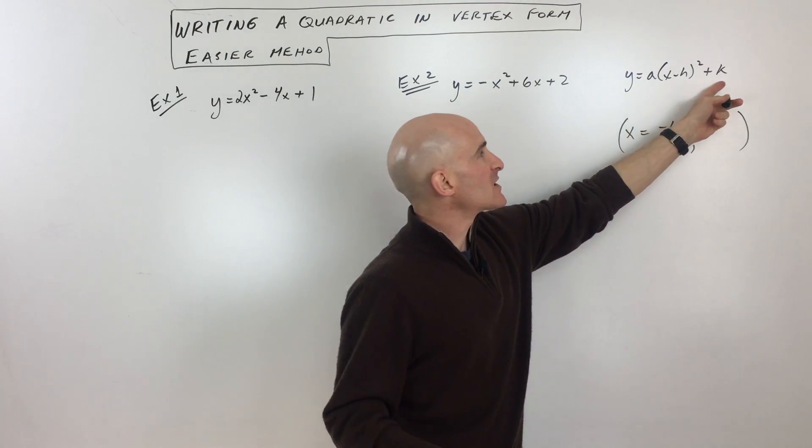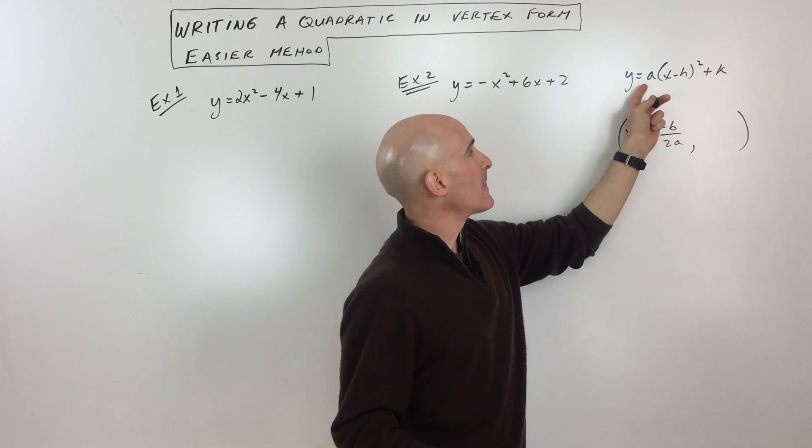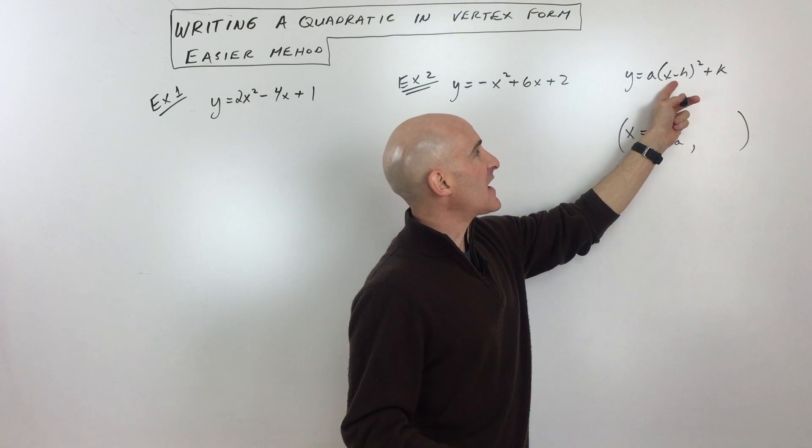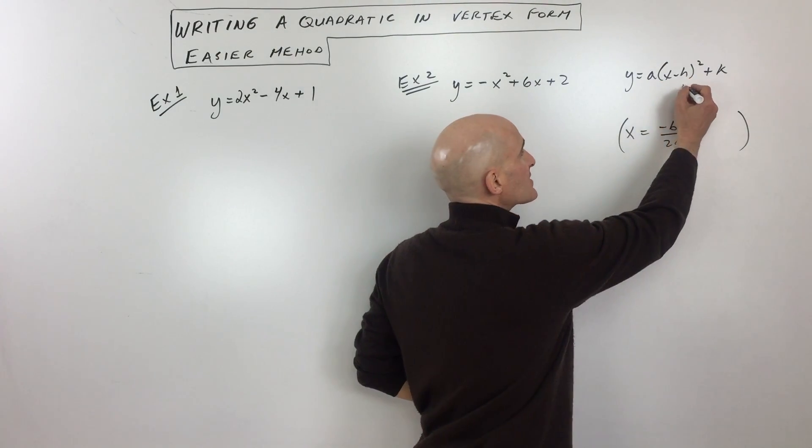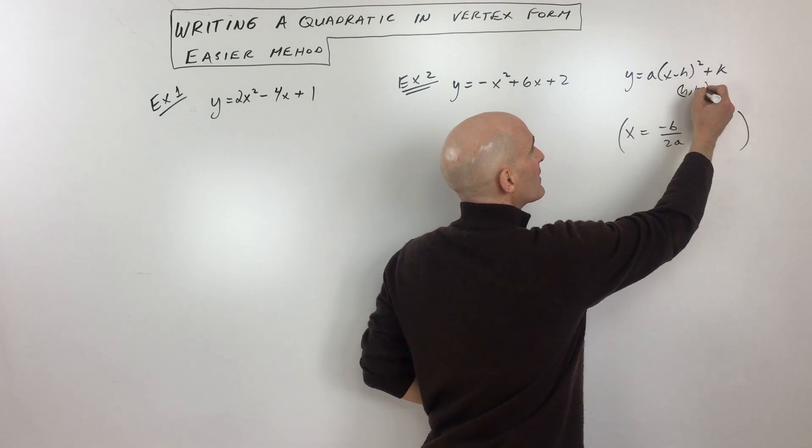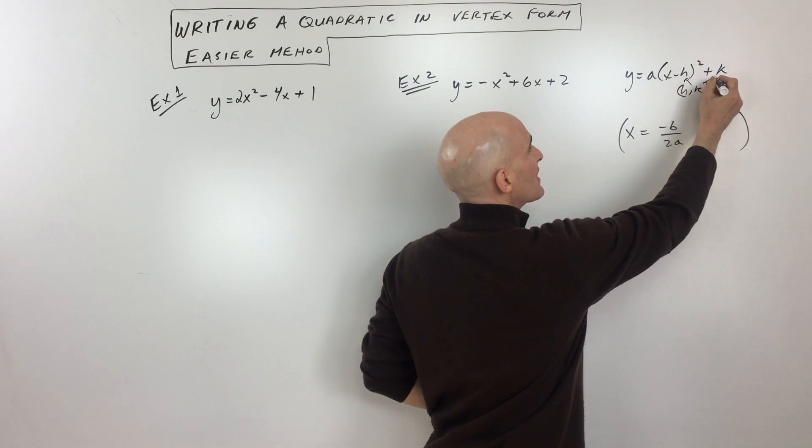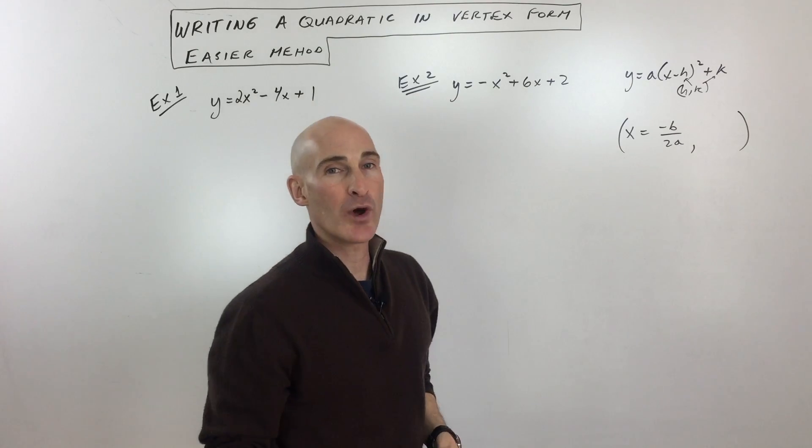When you think about writing a quadratic in vertex form, this is the form that we're after here. y equals a times x minus h, the quantity squared, plus k. And our vertex is h, comma, k. So you can see the h and the k right there. That's the vertex point.